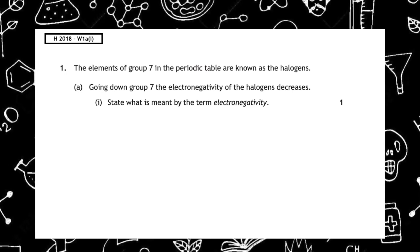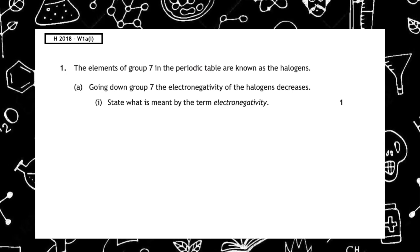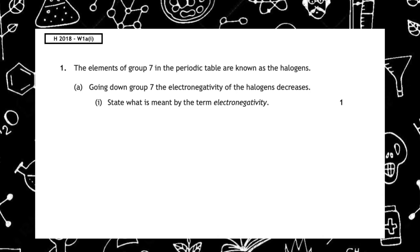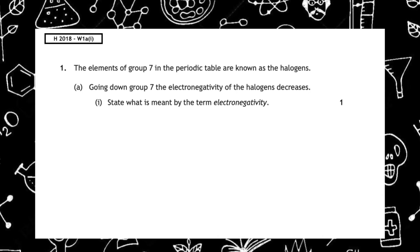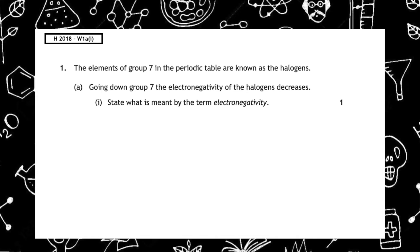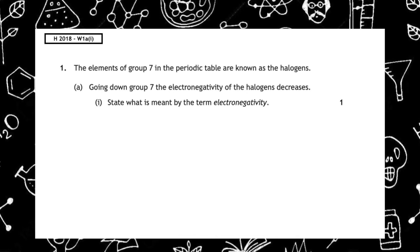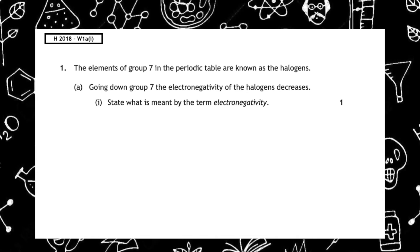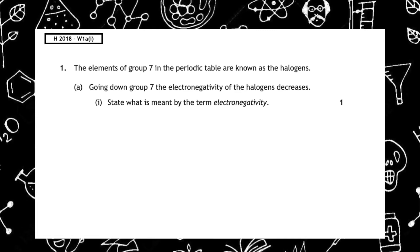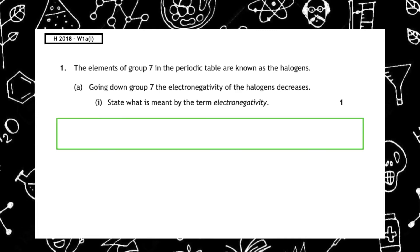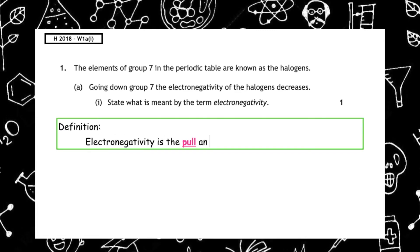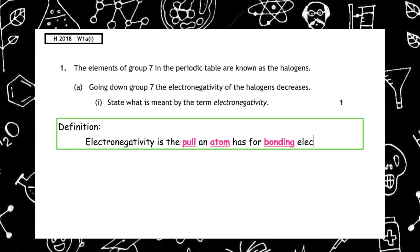This past paper question is from the Higher 2018 written 1A part 1. The elements of group seven in the periodic table are known as the halogens. Going down group seven, the electronegativity of the halogens decreases. State what is meant by the term electronegativity. Electronegativity is the pull that an atom has for bonding electrons.